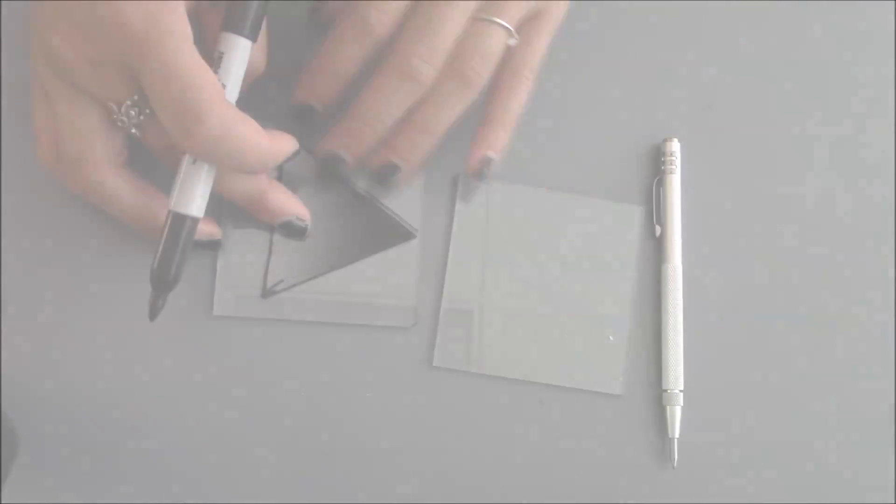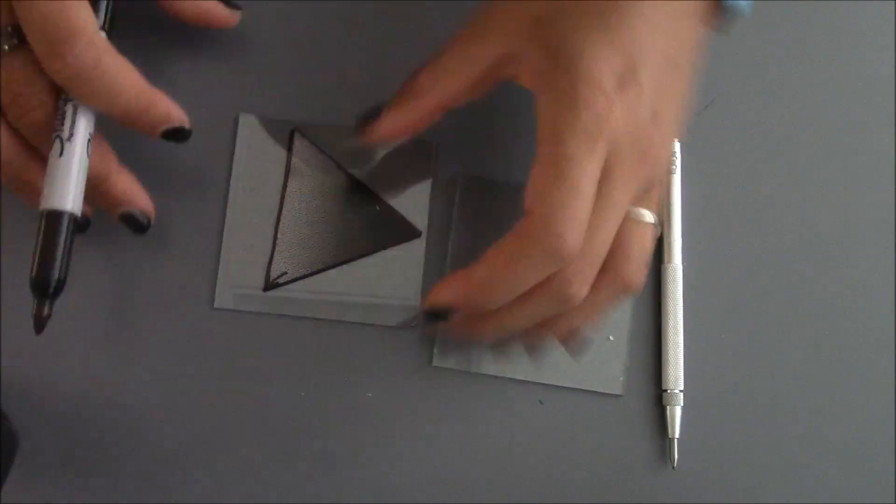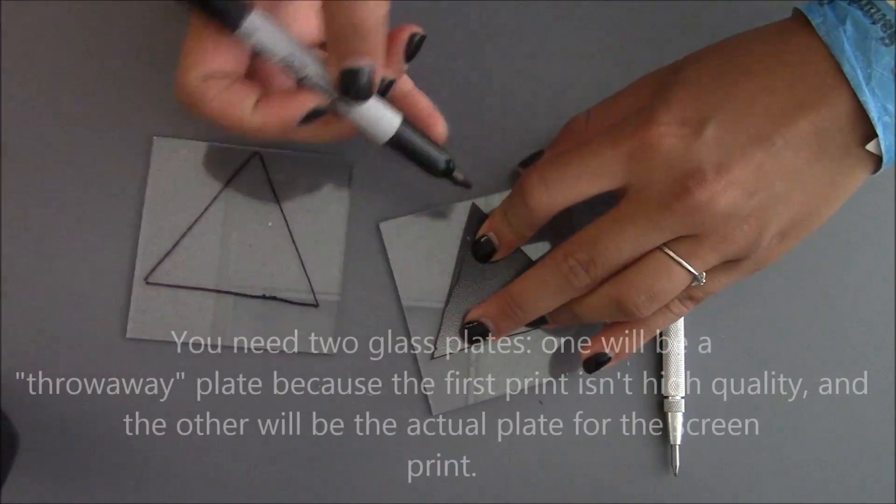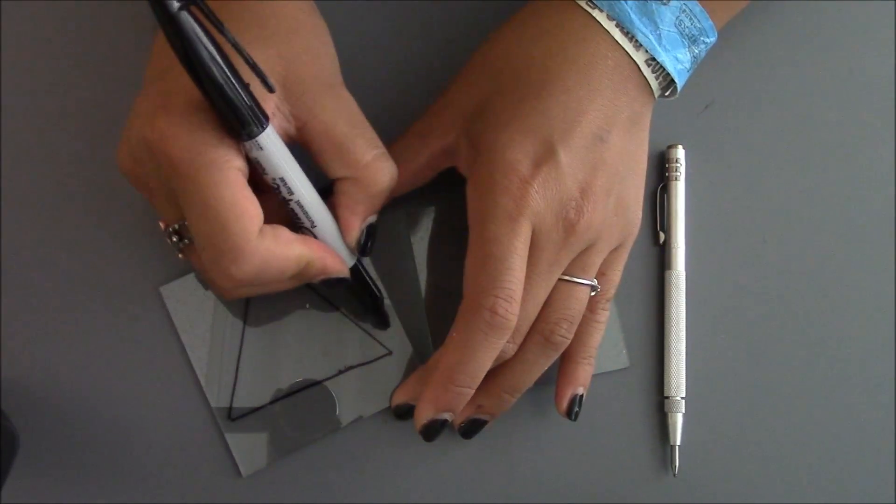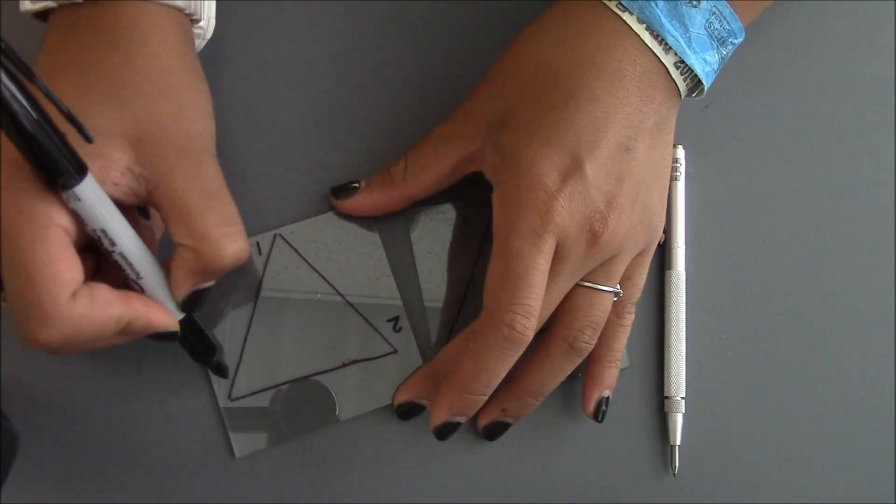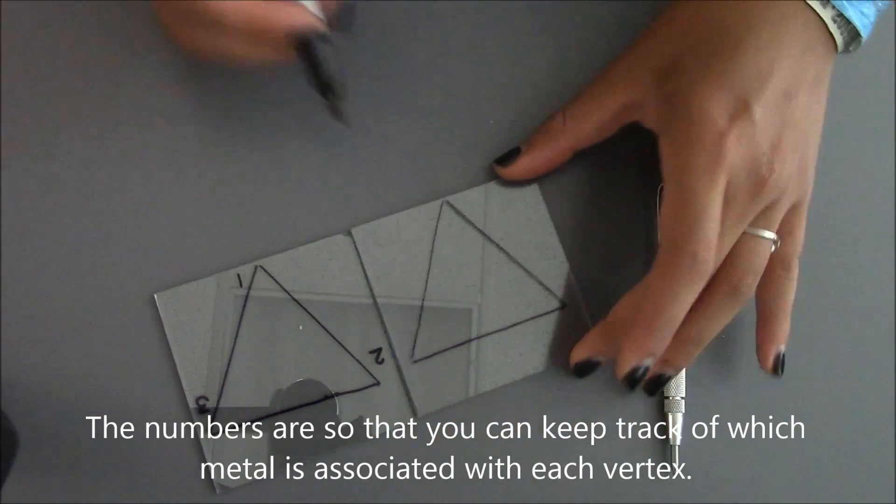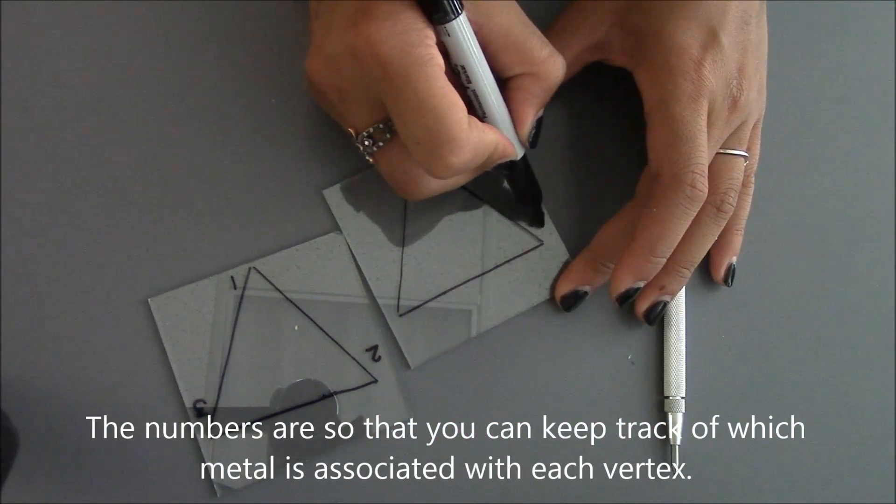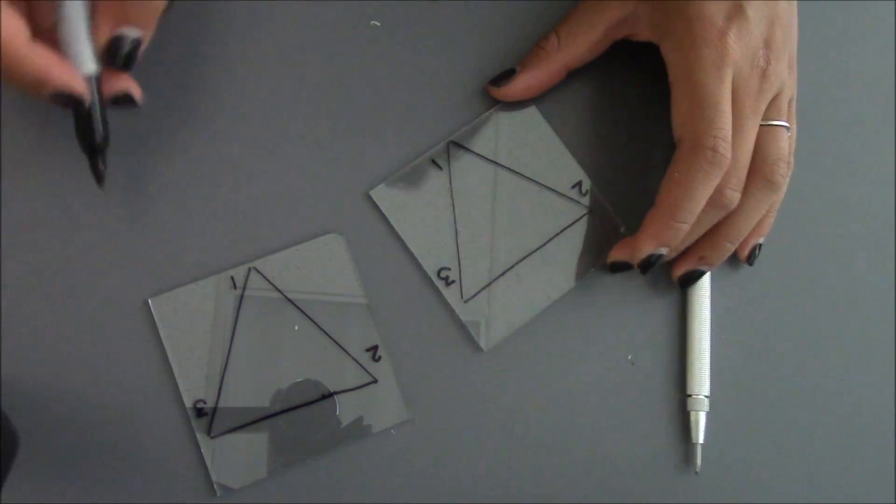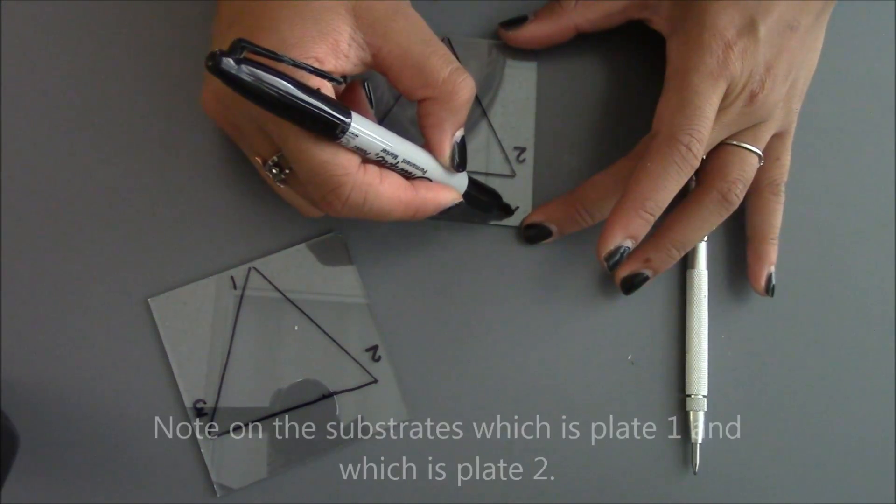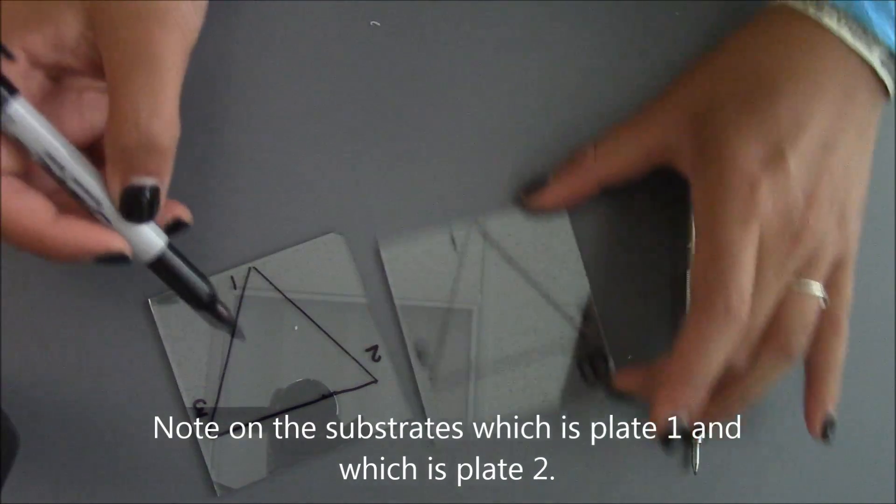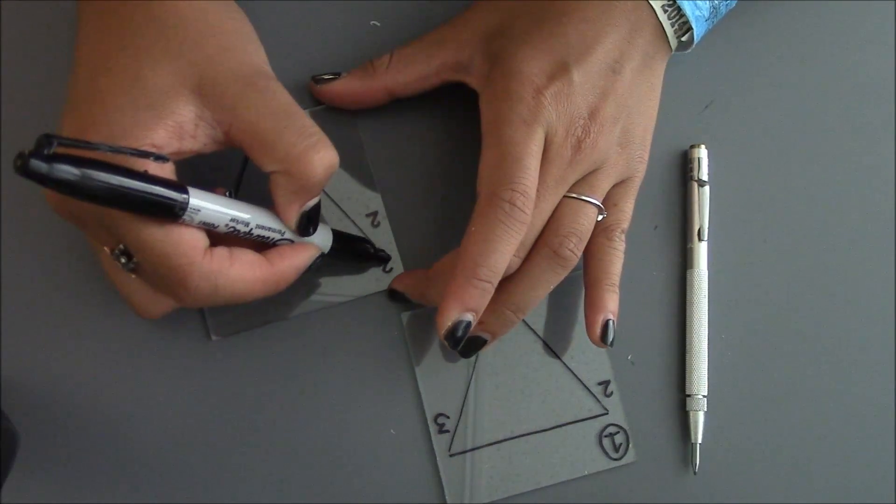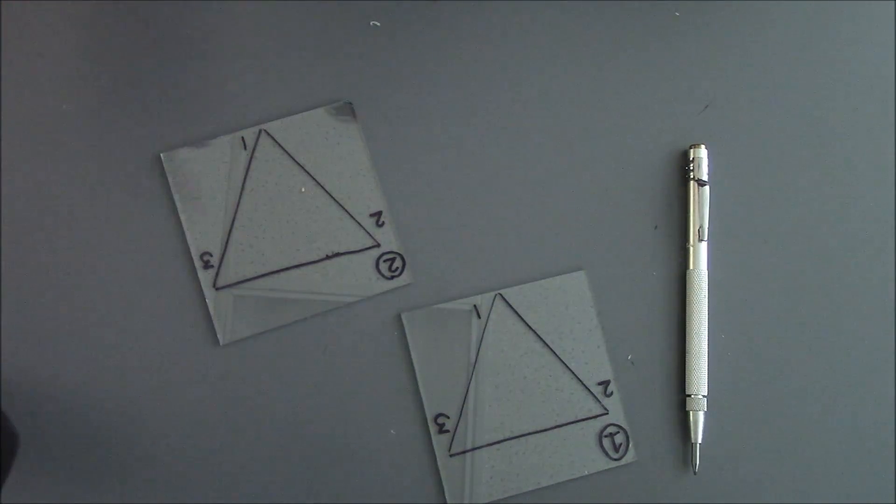Repeat this process on a second substrate. After tracing the triangle image, label each of the triangle's corners 1, 2, and 3. And then take your glass scribe pen and label the edge of the substrate with the date.